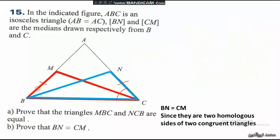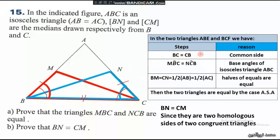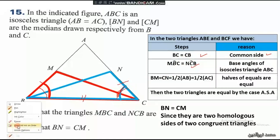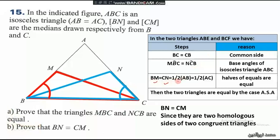So we now have: BM equals CN, angle MBC equals angle NCB since they are base angles of the isosceles triangle ABC, and BC equals CB as a common side. Therefore, the two triangles MBC and NCB are congruent by the case side-angle-side.